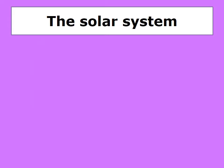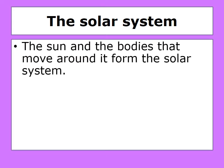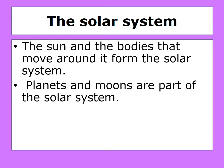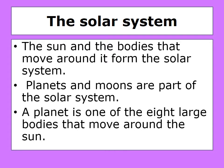The solar system. The sun and the bodies that move around it form the solar system. The planets and the moons are part of the solar system. A planet is one of the eight large bodies that move around the sun.